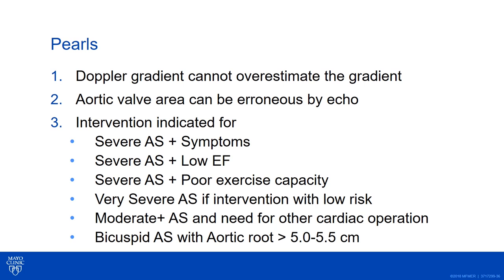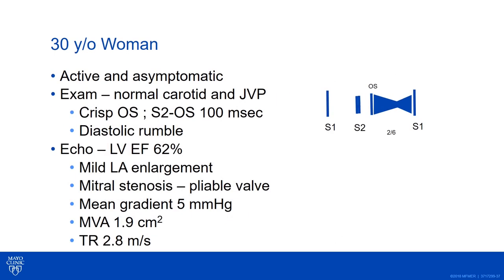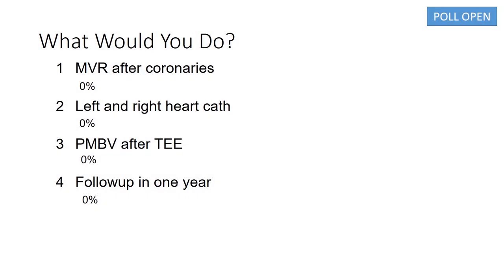Now let's move to the mitral valve and another question. Here's a 30-year-old woman who's active and asymptomatic. Her ejection fraction is normal, her LA is big, she has a pliable valve with a mean gradient of 5, a calculated valve area of 1.9, and normal tricuspid valve velocities. How are we going to manage her? Mitral valve replacement, left and right heart cath, balloon valvotomy, or follow-up in one year?